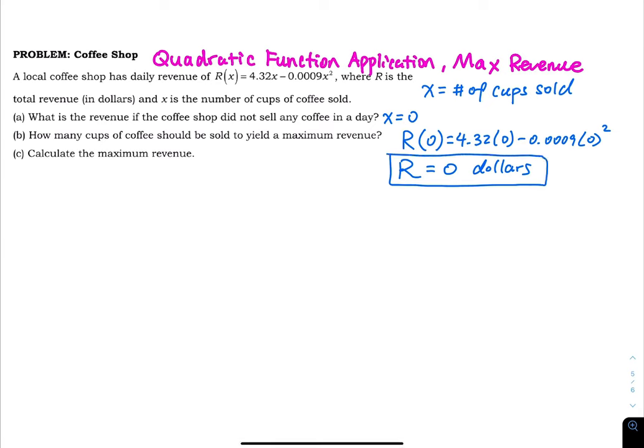Every time you sell a cup of coffee, you collect some money. If you sell nothing, then you collect no money. So that makes sense - if you sell nothing, your revenue is zero dollars. Part b is how many cups of coffee should be sold to yield a maximum revenue.